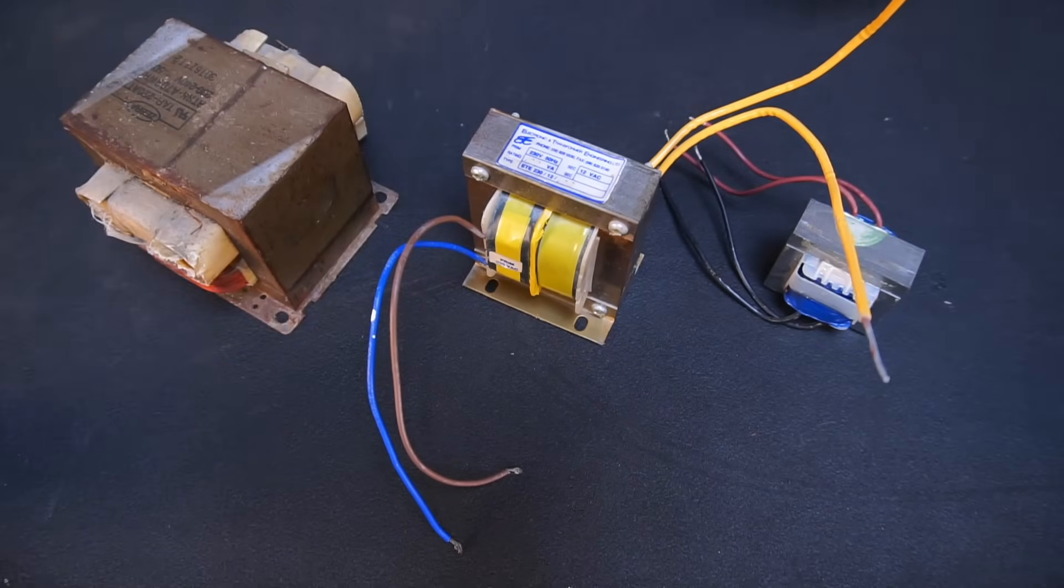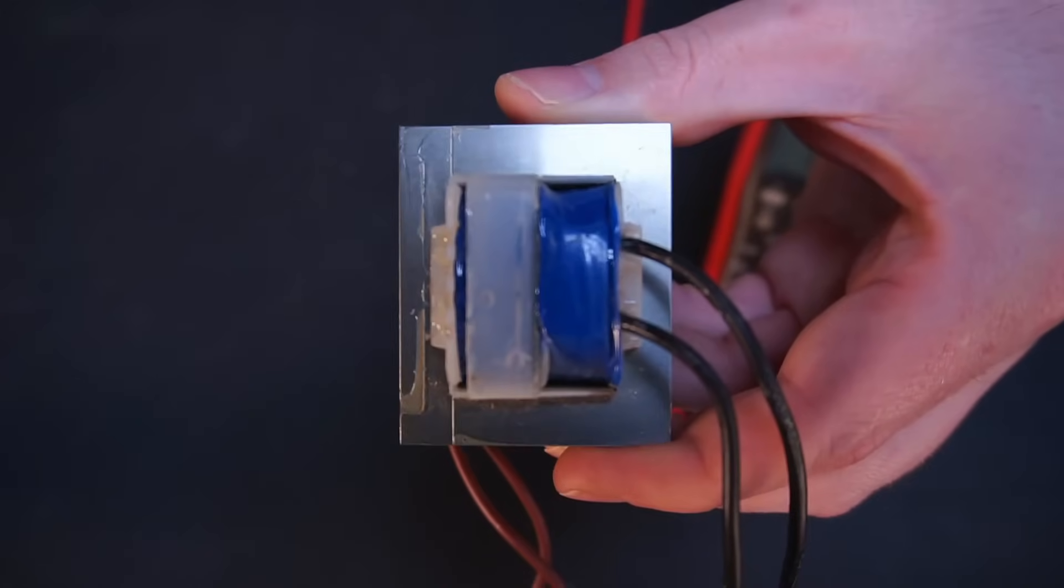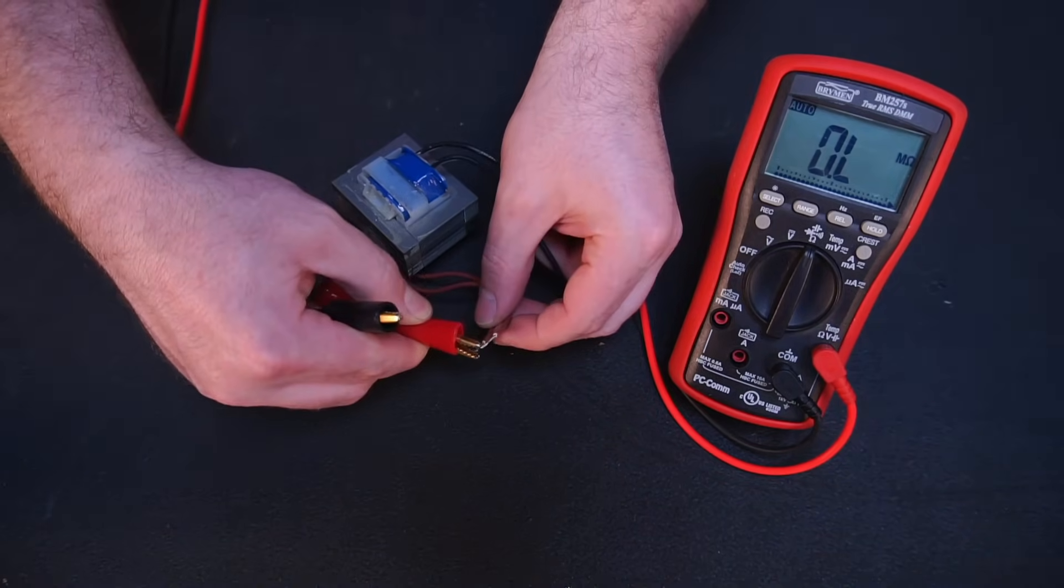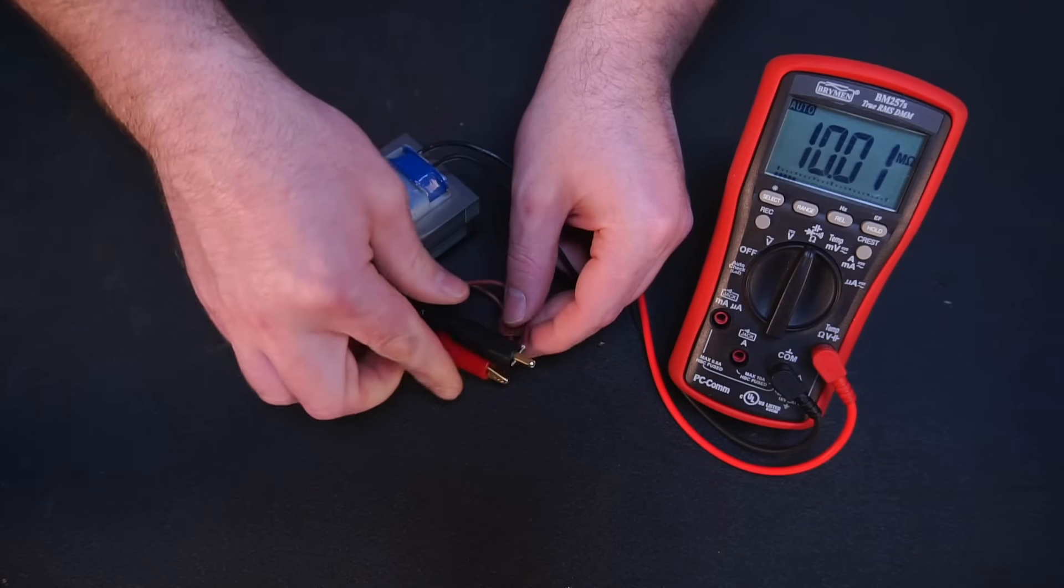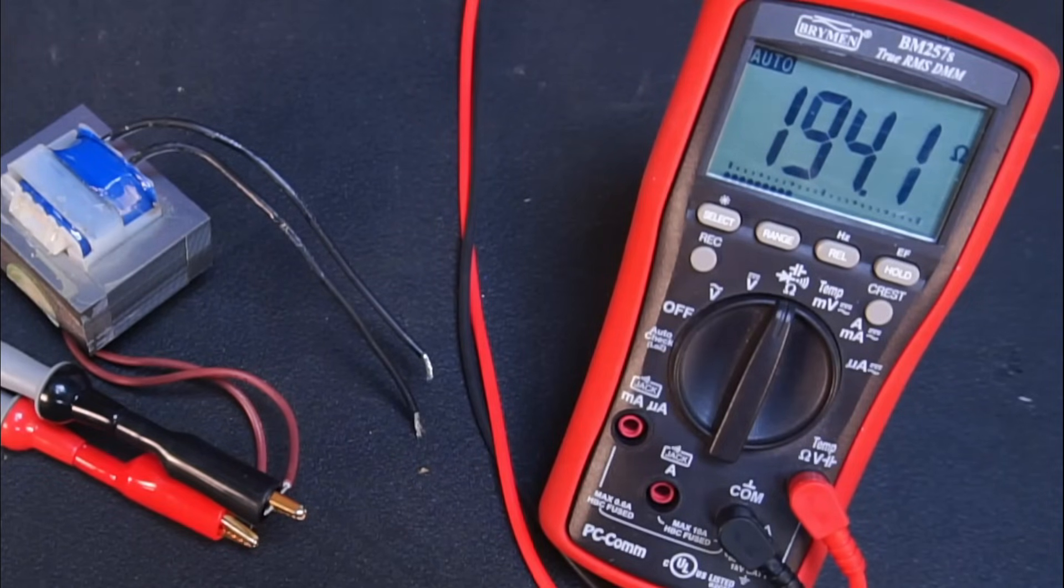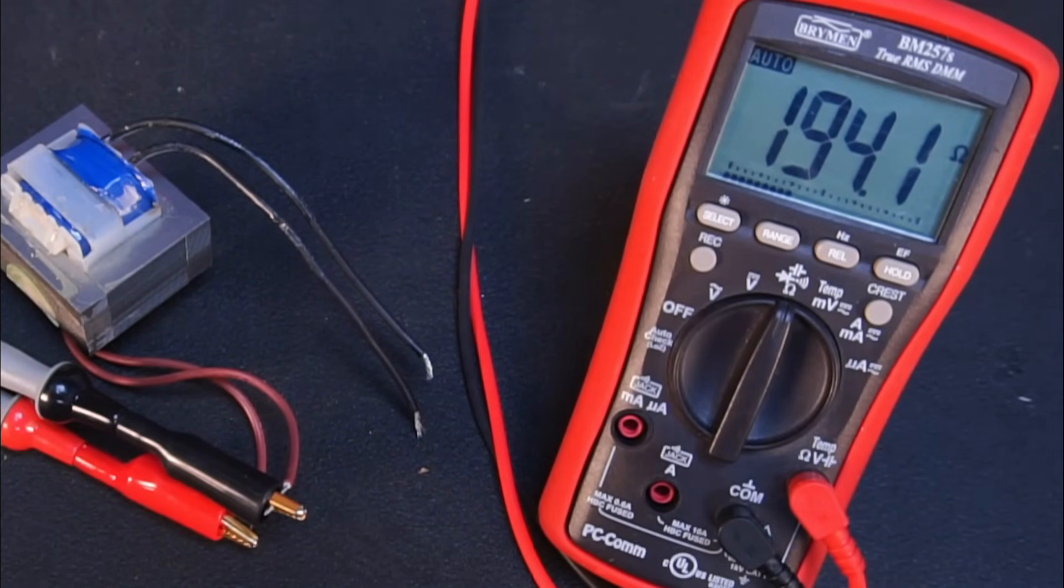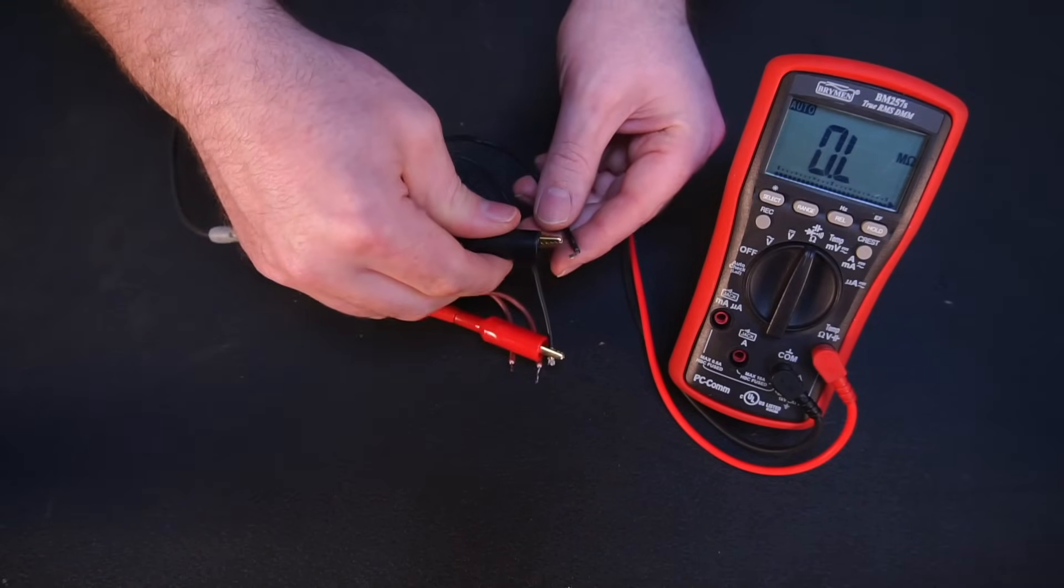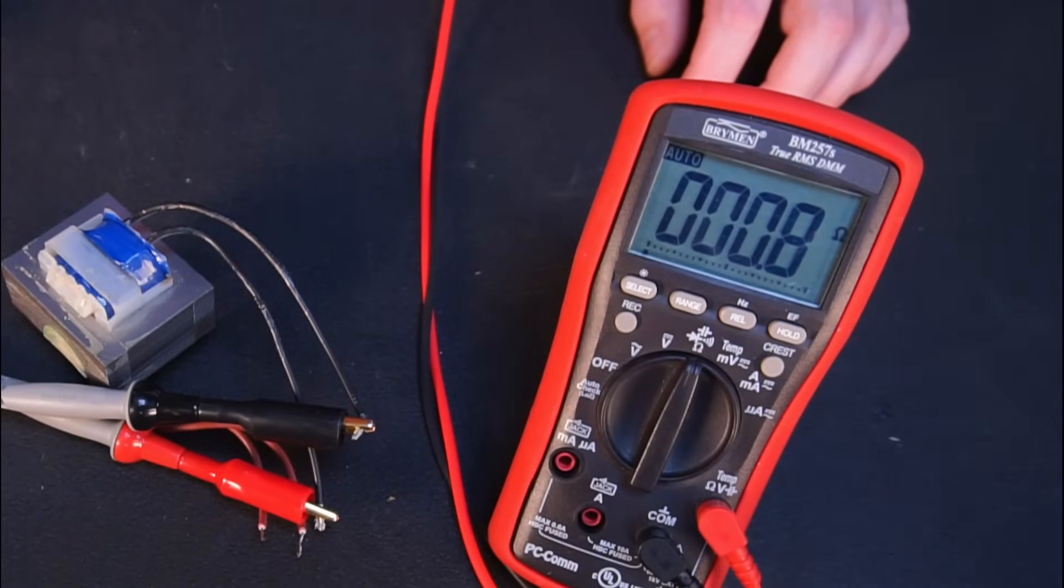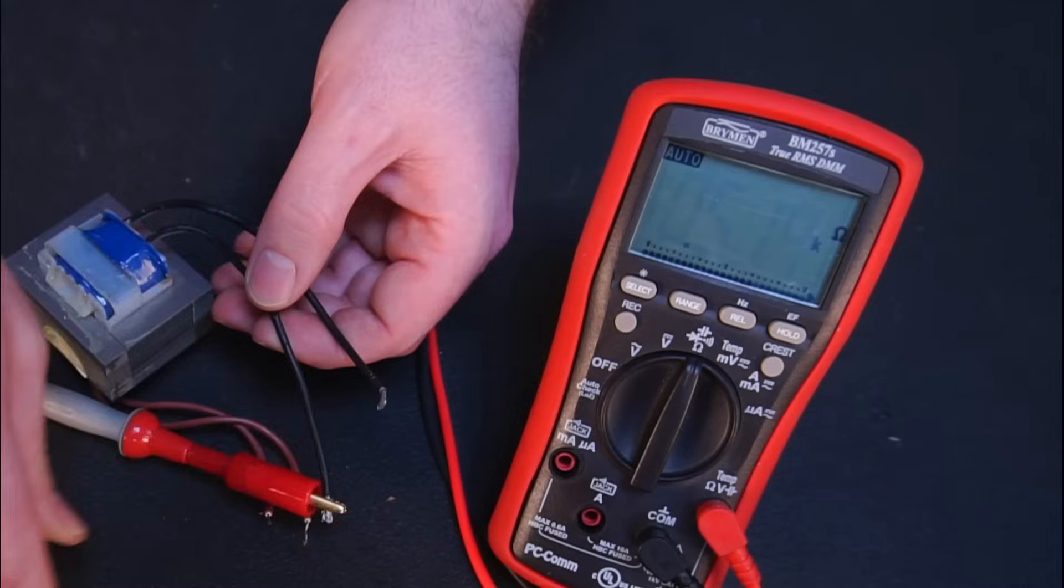Here I have three transformers to choose from. Let's start off with the smallest one. I have my multimeter set to measure resistance and I'll connect my meter to one of the transformer's windings. This winding measures in at 194 ohms, which isn't ideal for this project. So let's measure the other winding. It measures in at 0.7 ohms, making it a viable option for this project.